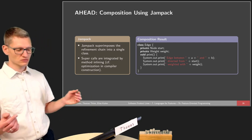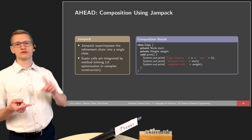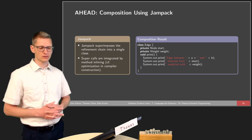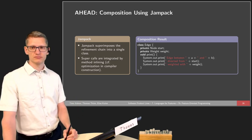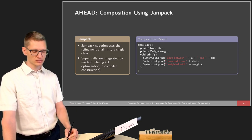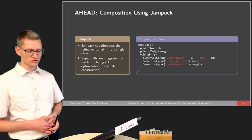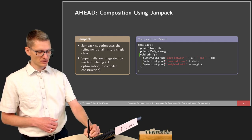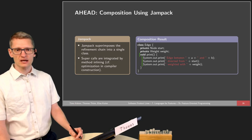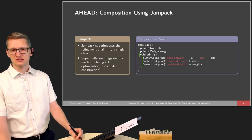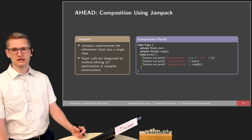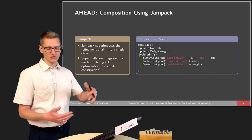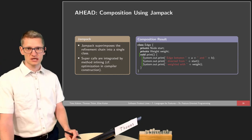Now the basic question is: we have two questions — how to define those collaborations, and how to compose them. One tool available in AHEAD is Jampeg. Jampeg superimposes the refinement chain into a single class. The single class will contain only one instance of the print method with all the content from the different collaborations — very similar to method inlining in compiler construction, which is also an optimization technique to avoid method call overhead.